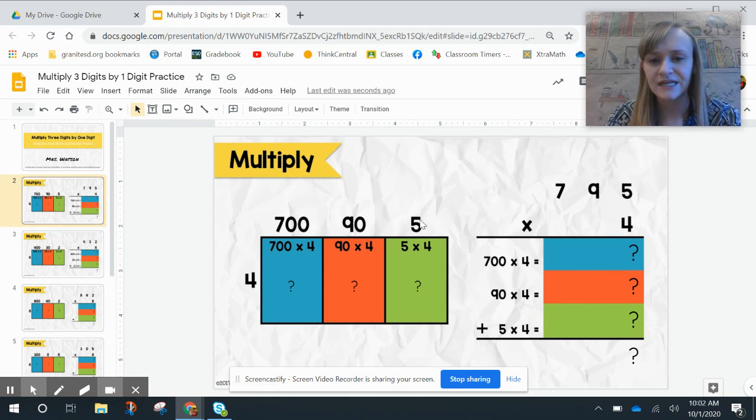I've got 795. It represents our expanded form of our first factor. Then our number 4 goes over here on the side.